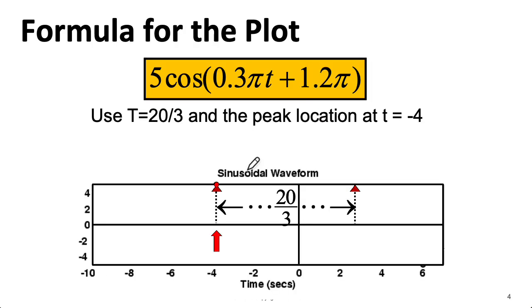We could then locate that peak on the graph here. Then we could find another peak that's a period away, which here is 20 divided by 3 away. Then we can march along, and the next zero, and then the valley, and then the next zero,